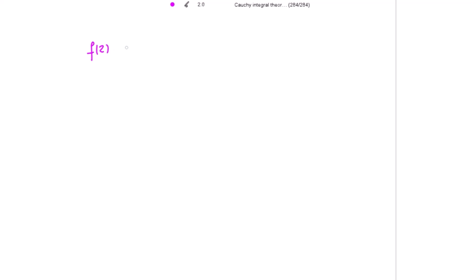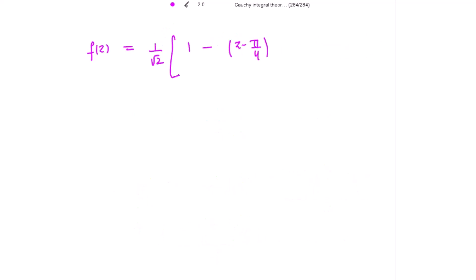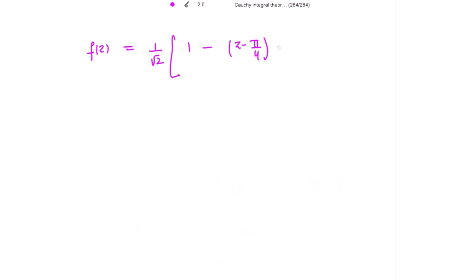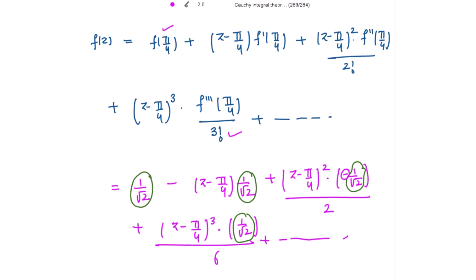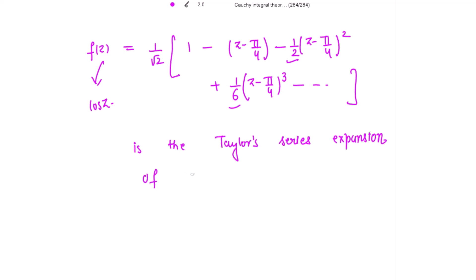Taking 1/√2 common from all terms, f(z) = (1/√2)·[1 - (z - π/4) - (z - π/4)²/2 + (z - π/4)³/6 + ...]. You can also write the terms with factorials. This is the required Taylor series expansion of cos(z) about z = π/4.